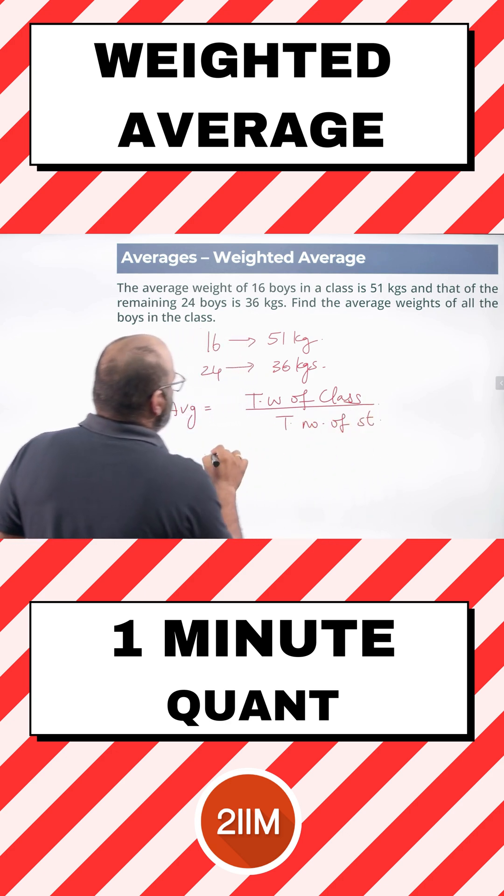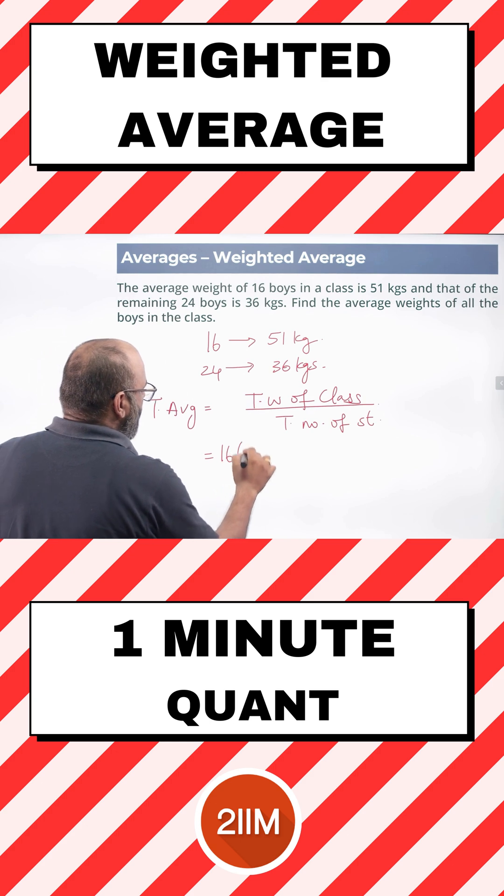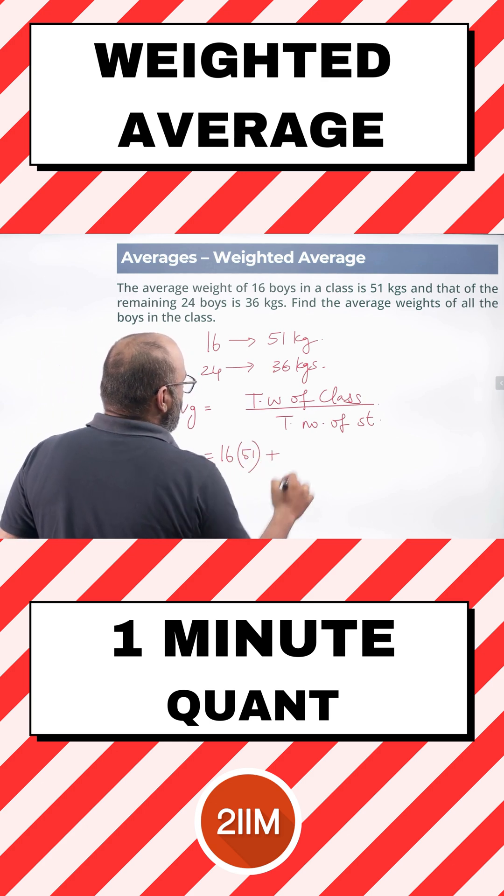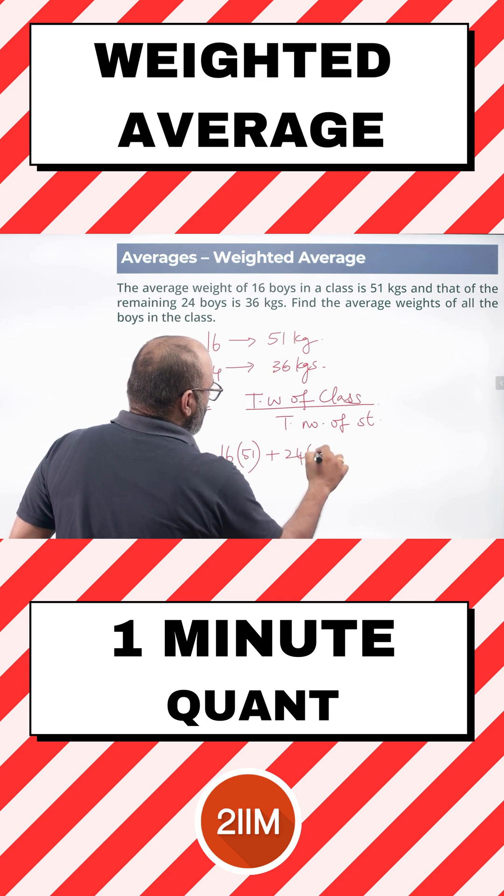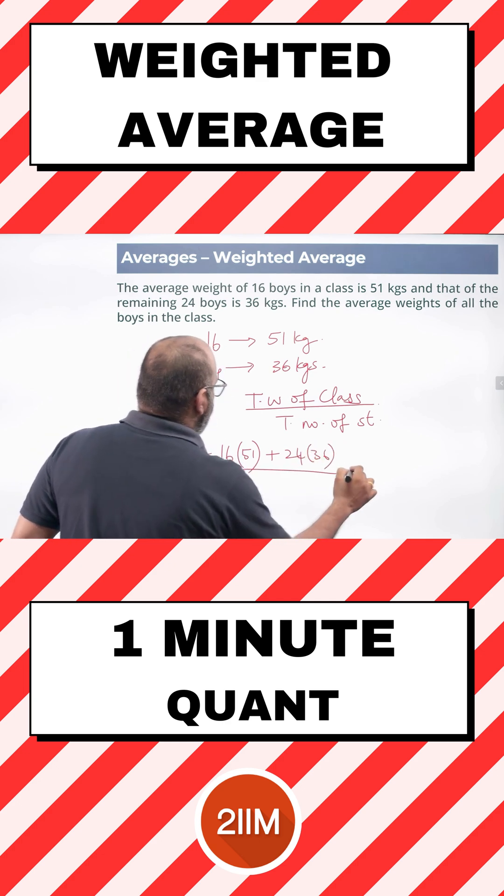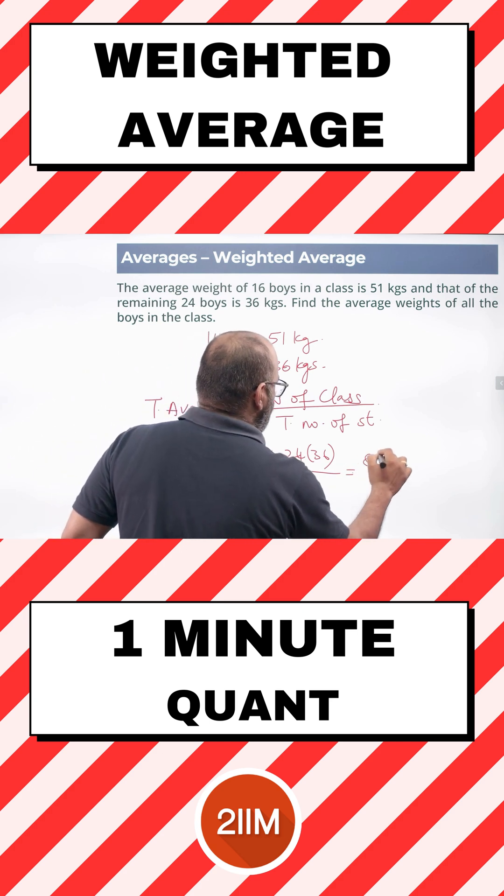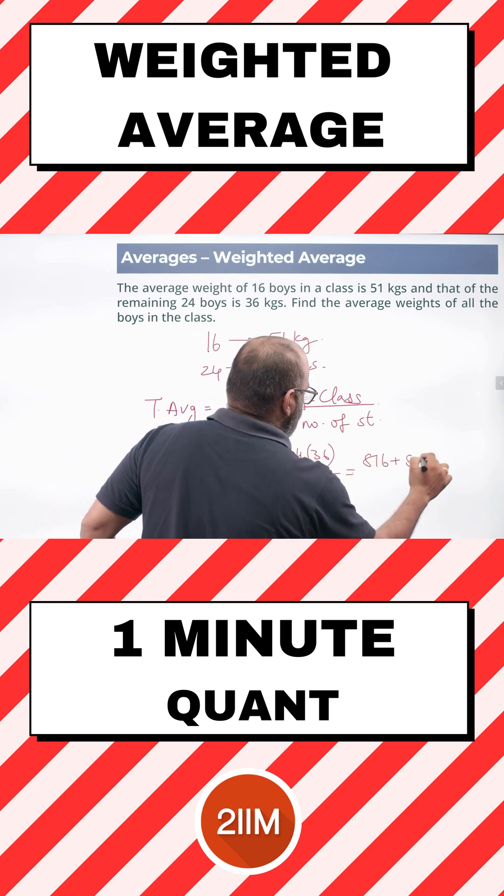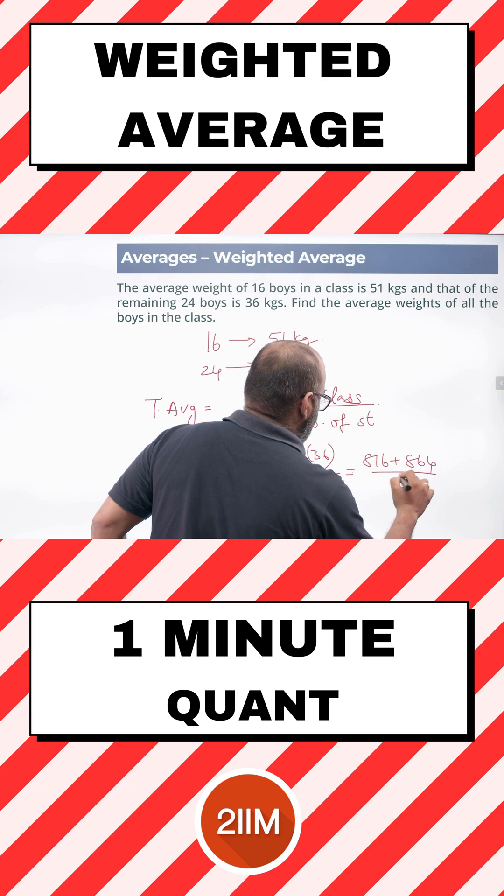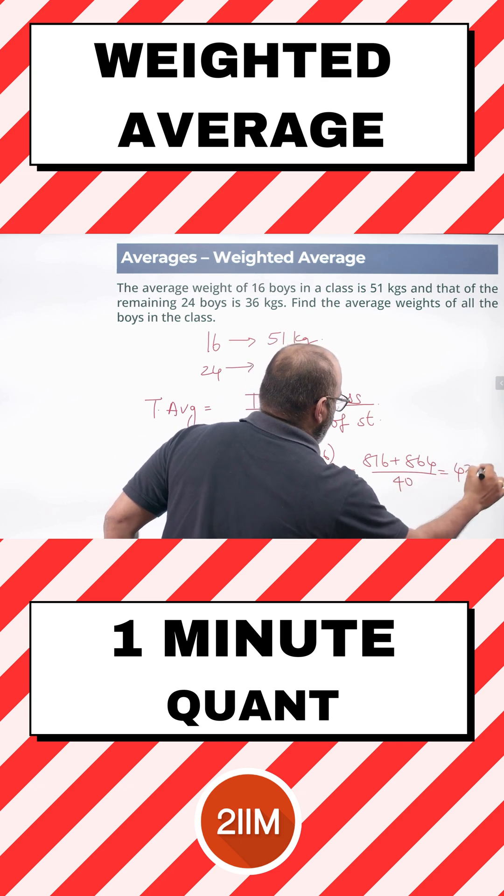So, in that case, 16 students with an average of 51 gives us a total of 16 into 51 plus 24 into 36 divided by we have a total of 40 students. So, this is 816 plus 864 by 40 giving us a value of 42 kgs.